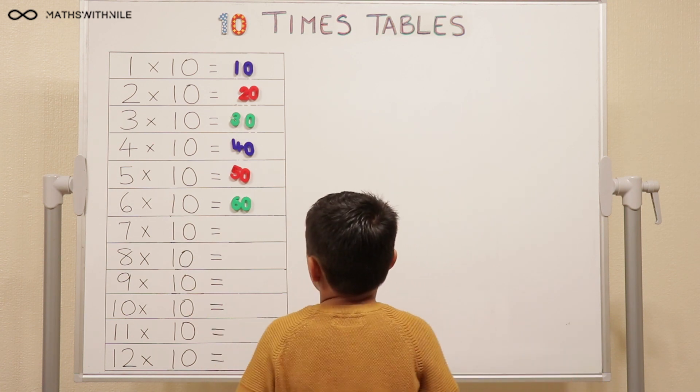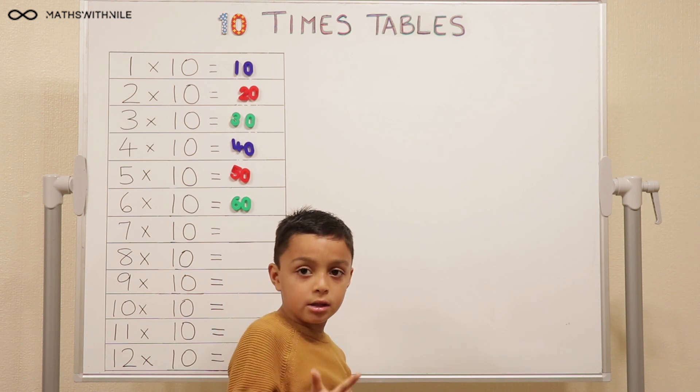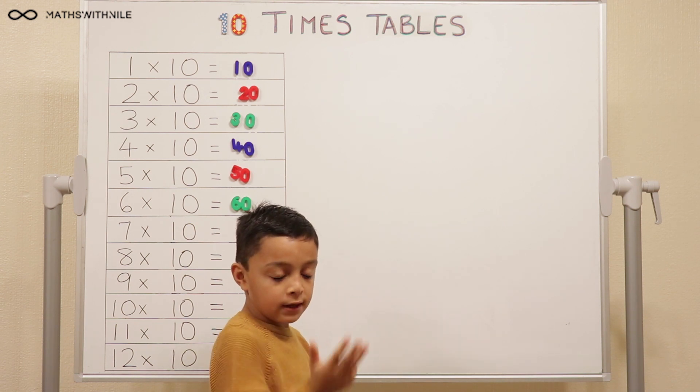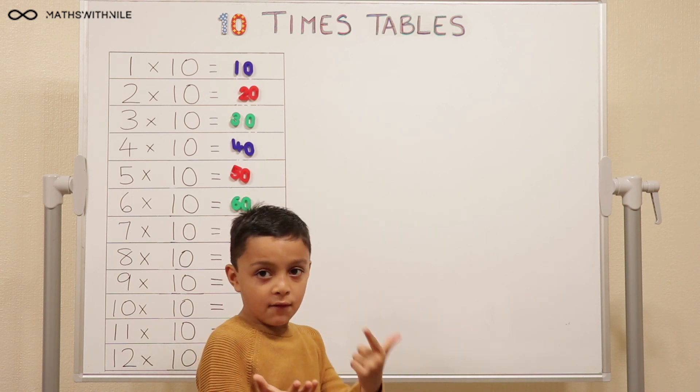6 times 10, so 10, 20, 30, 40, 50, 60, 70.